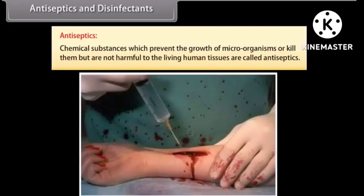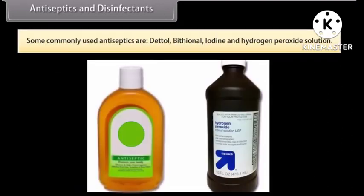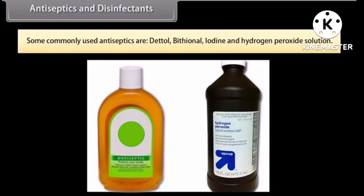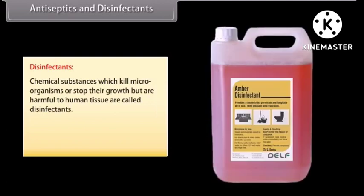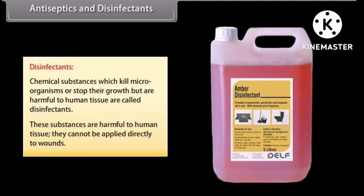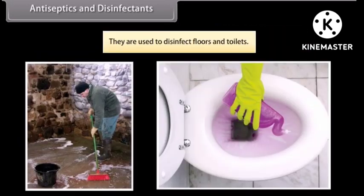Antiseptics: chemical substances which prevent the growth of microorganisms or kill them but are not harmful to living human tissues are called antiseptics. Antiseptics are applied to living tissues — wounds, ulcers, and diseased skin surfaces. Some commonly used antiseptics are Dettol, bithionol, iodine, and hydrogen peroxide solution. Disinfectants: chemical substances which kill microorganisms or stop their growth but are harmful to human tissues are called disinfectants. These substances cannot be applied directly to wounds. They are used to disinfect floors and toilets. For example, phenol, sulfur dioxide, and chlorine.